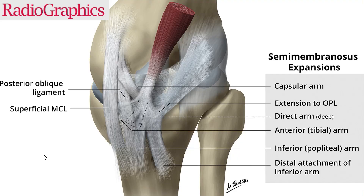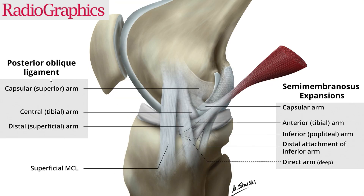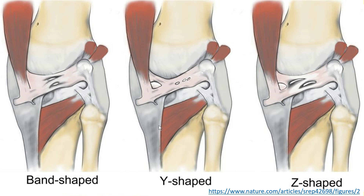If you go into the literature and look at the illustrations in these articles, they are always very fancy. You have all these semimembranosus expansions, then the MCL and behind the MCL the posterior oblique ligament, which even has different fibers — a capsular arm, central arm, and so on. In addition, there is the oblique popliteal ligament, and they even describe five different types. I only show three here because I think it's excessive for us to know as radiologists.